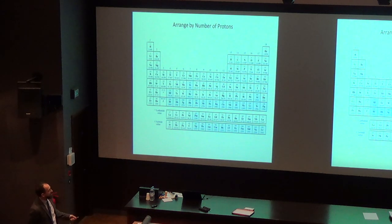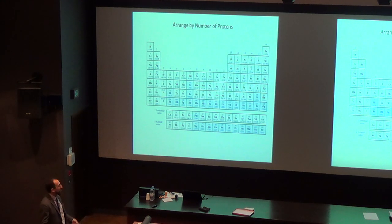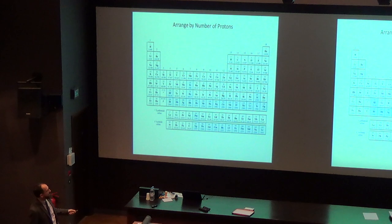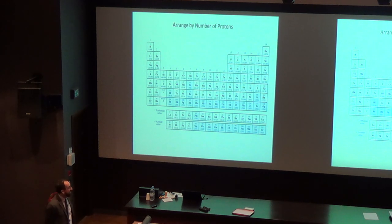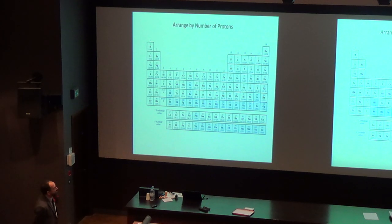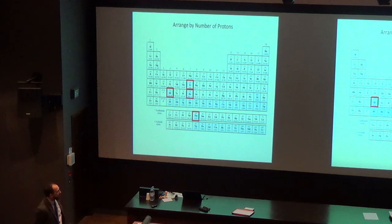Moseley was very quickly able to determine where there were gaps in the periodic table. In his day, many elements had not yet been discovered — some heavy ones, but also holes like technetium at 43, hafnium at 72, and rhenium at 75. He knew they were missing because he found something with 42 protons and something with 44, but nothing with 43. So he was able to predict all of these missing elements at one time.